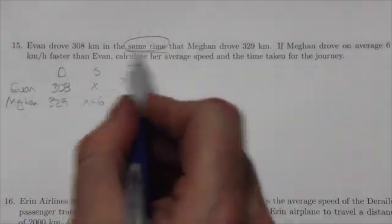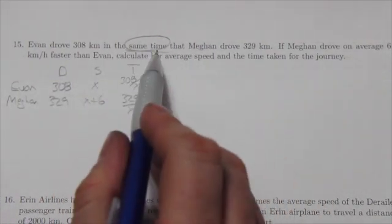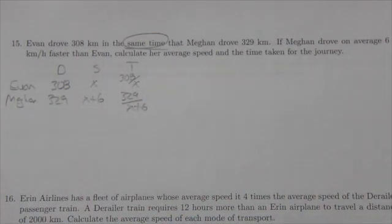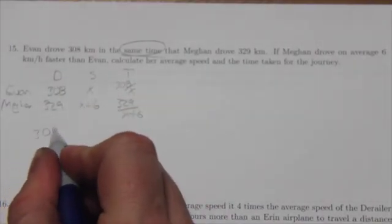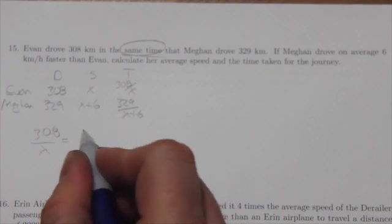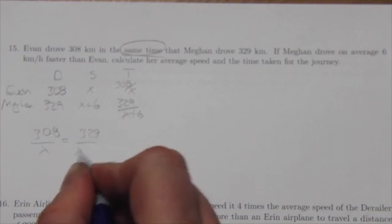Now in this case here the question gives us additional information about time. It tells us that these two times are in fact the same. So what we've got here is we've got that 308 over X is identical to 329 over X plus six.